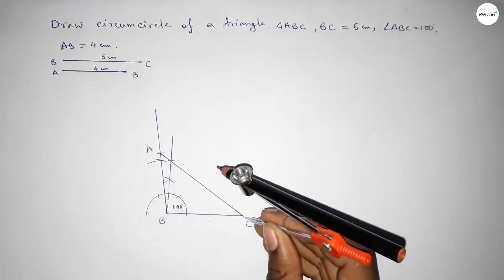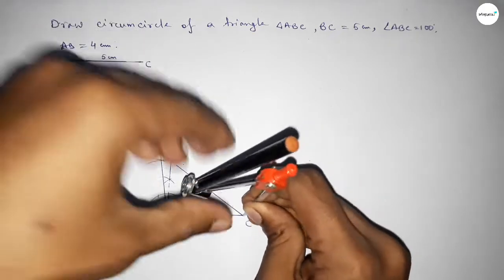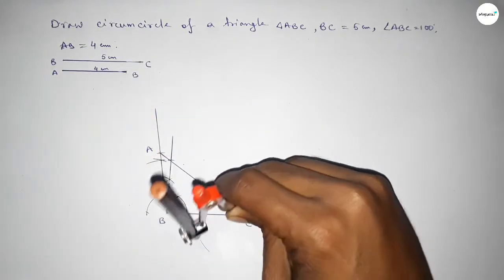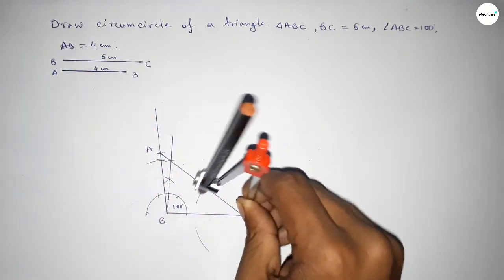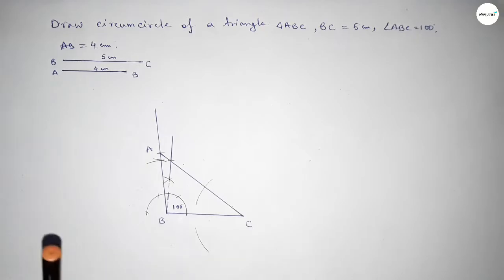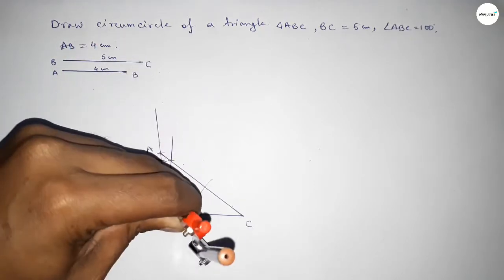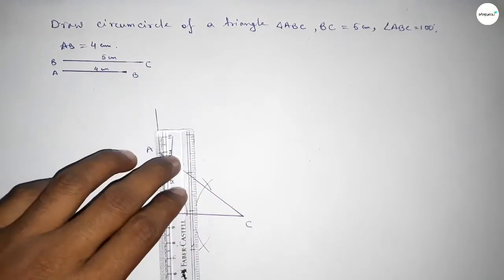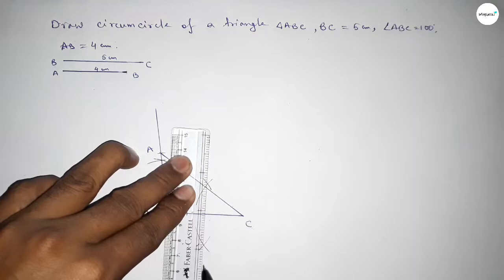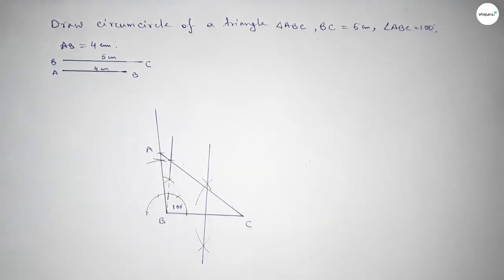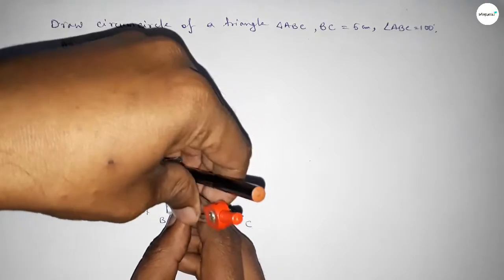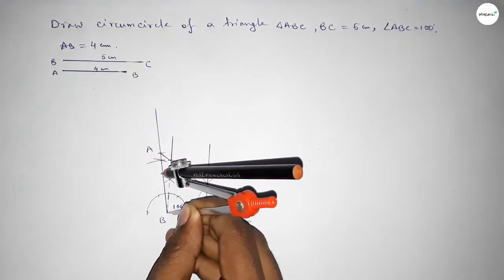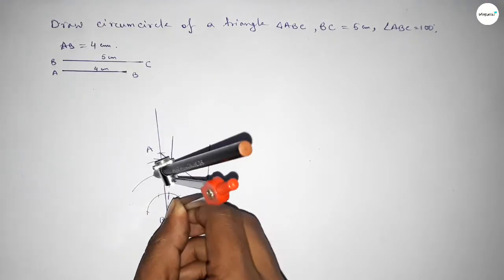Next, we have to bisect line BC. Taking greater than half of BC, drawing arcs on both sides. Placing the compass on point B and cutting here and cutting here. Both curves intersect and we join to get the perpendicular bisector of BC.